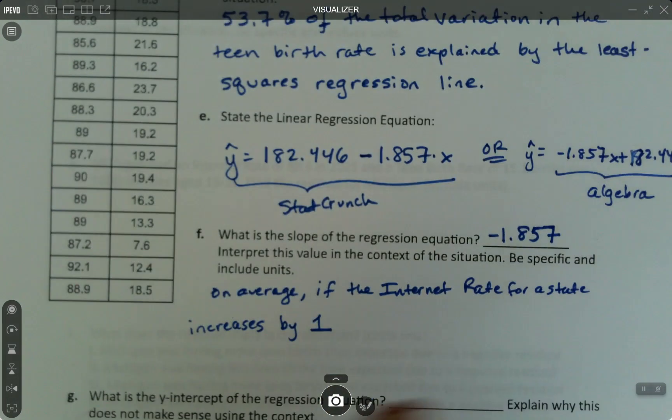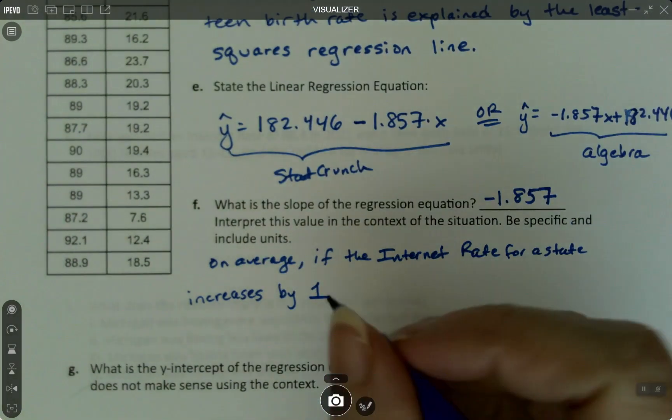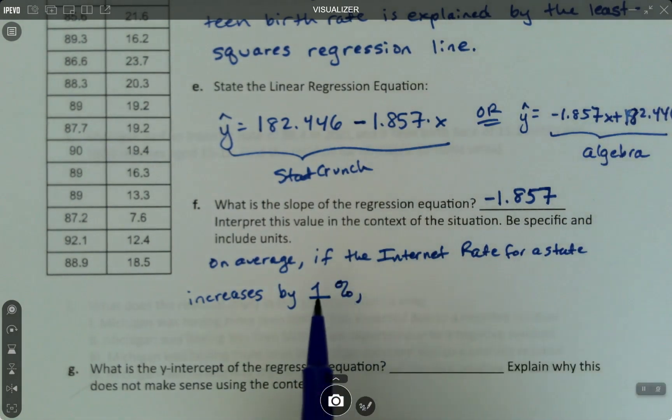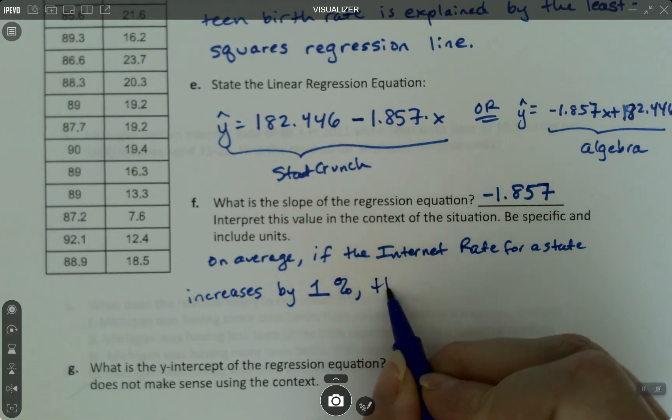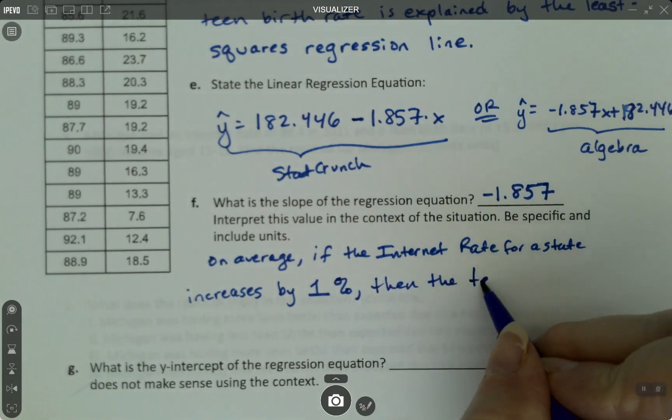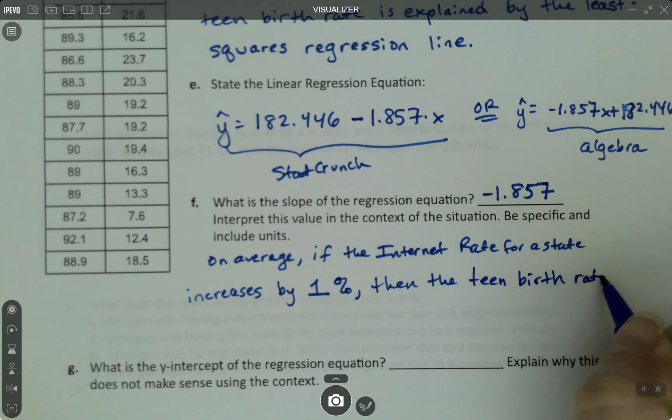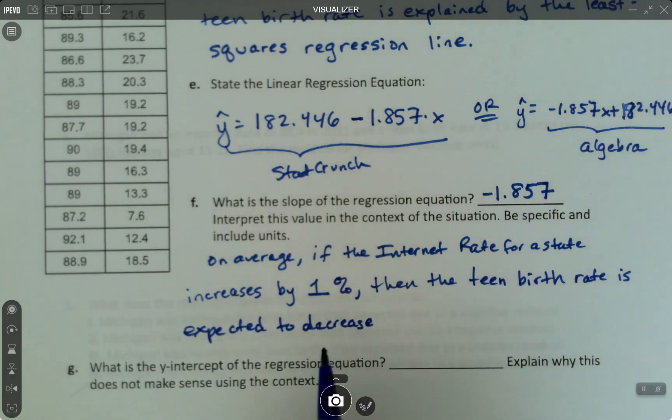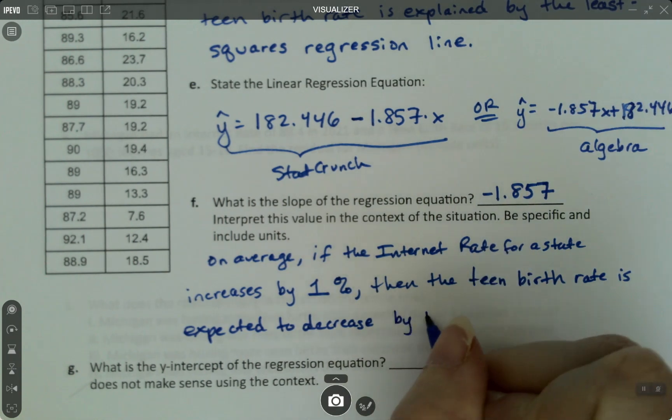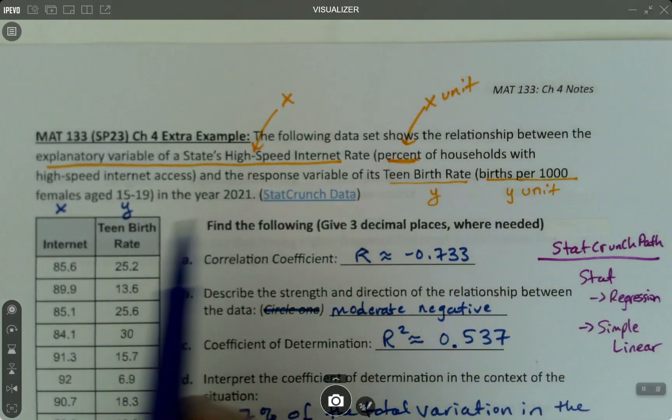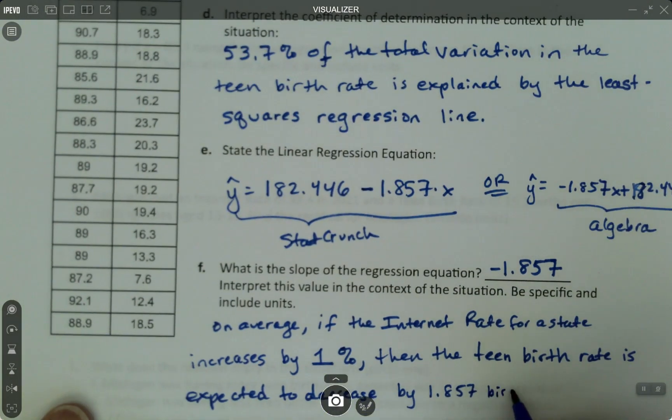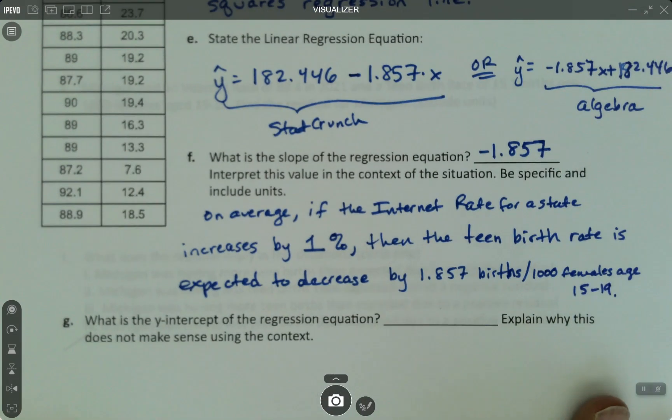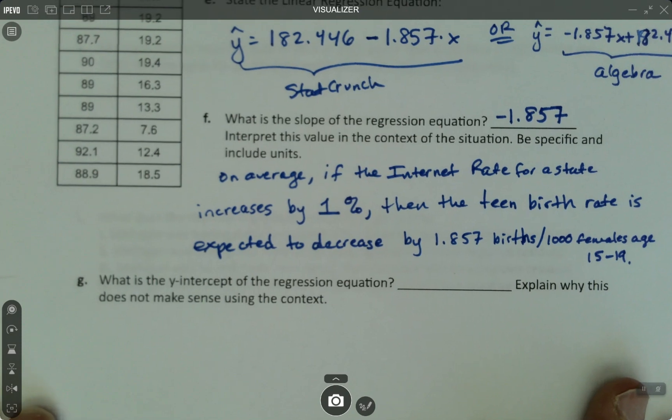So, we'll say percent right here. Because that was the unit, if you will, for that x variable. Then we'll say, then the teen birth rate is expected to decrease... Now, I say decrease because it's negative. By 1.857. And then the unit is this births per 1,000 females aged 15 to 19. So, births per 1,000 females aged 15 to 19. I ran out of space there.